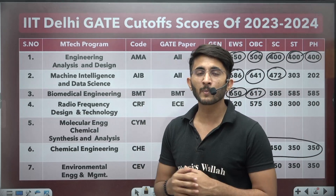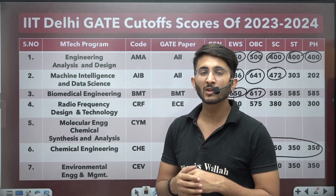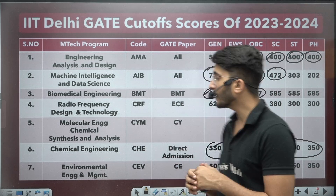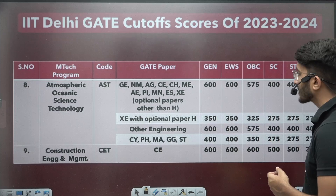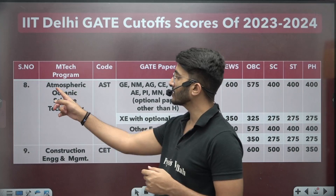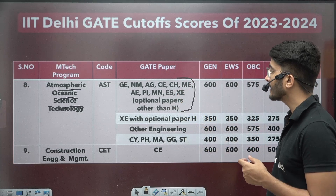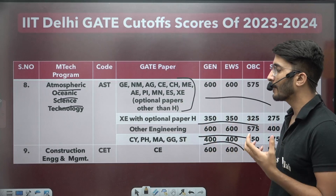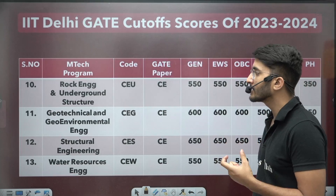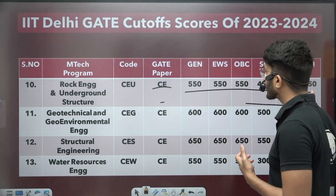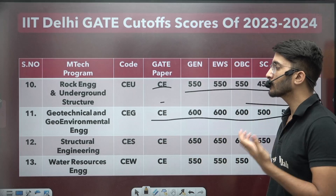Many students already pursuing masters in IIT Delhi or other IITs are discussing things there, so you will learn a lot. For Environmental Engineering and Management, civil engineering students are eligible with respective cutoff marks. For Atmospheric and Ocean Science and Technology, this is an interdisciplinary course with multiple branch GATE paper students eligible. For Construction Engineering and Management and Rock Engineering and Underground Structures, civil students are eligible with cutoff marks provided.